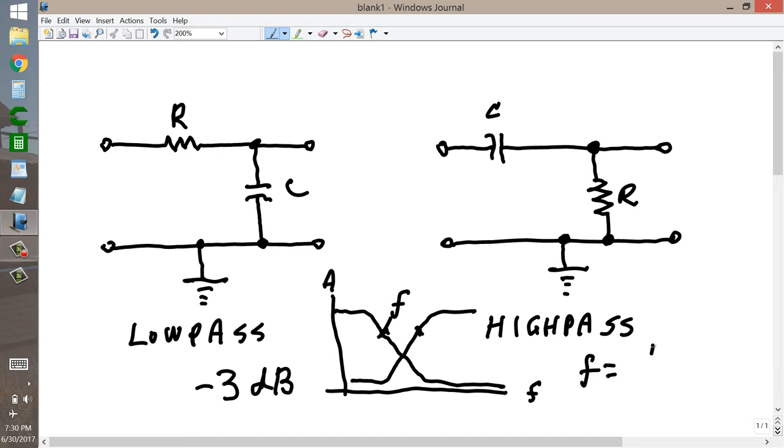f equals 1 divided by 2 pi r c, where the frequency f is expressed in hertz, the resistance r in ohms, and the capacitance c in farads. Pi is the circle constant, roughly equal to 3.14159. Notice that the entire 2 pi r c makes up the denominator of this fraction. This formula will also work for resistances in megaohms and capacitances in microfarads, because millions cancels out with millionths.